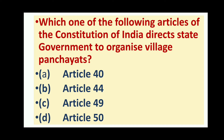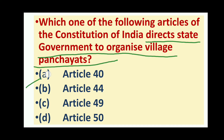Which article of the Constitution of India directs state governments to organize village panchayats? Article 40 is correct — Article 40 gives direction to the state government to organize village panchayats.